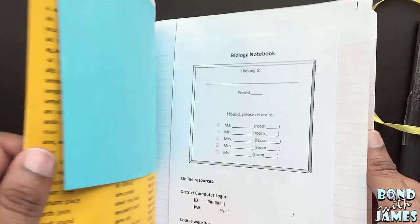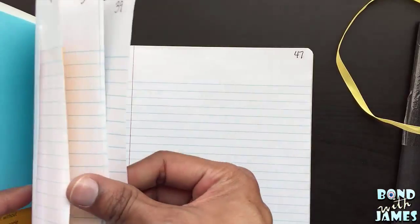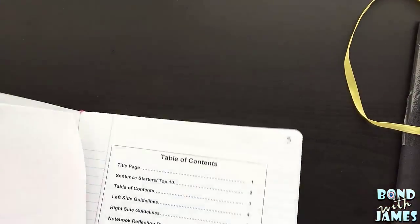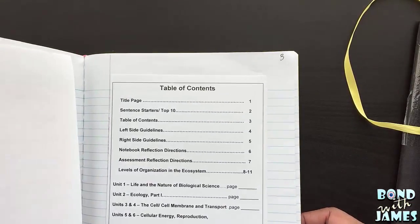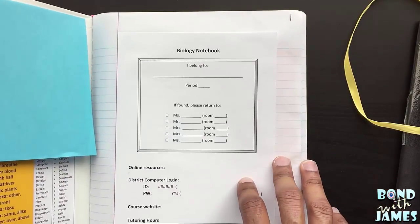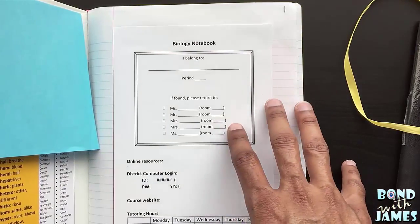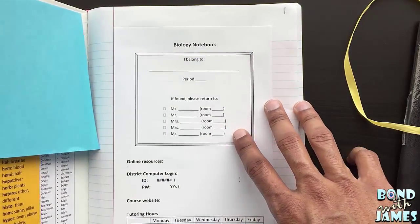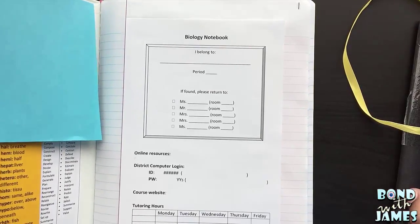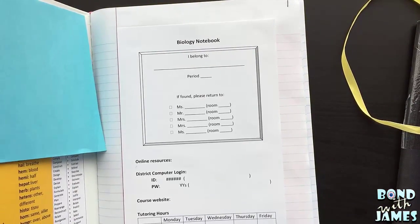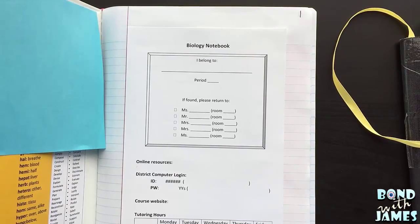One of the things that I have them do when they first bring in their interactive notebook is I have them begin numbering their notebooks one through 50. Even numbers on the left. Odd numbers on the right. Once they've done that, and I should preface this that I'm using information that my biology team at my campus utilizes. My biology team, we all have the same planning period off. So we all have fifth period off. And so we're able to plan together and we bring our interactive notebooks together.